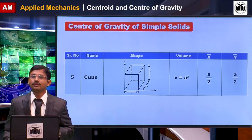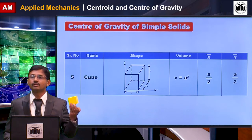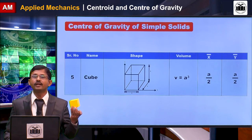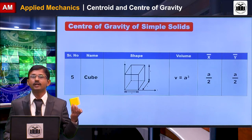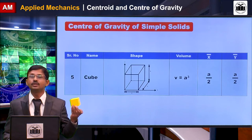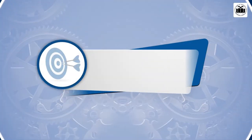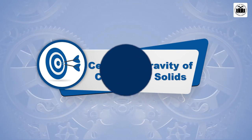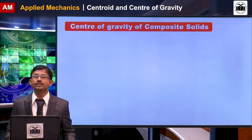The next figure is a cube. A cube has all dimensions equal. The volume of a cube is V = a³, and the centroid is at a/2 because it has symmetry about all axes. Hence x-bar is a/2. With the help of these simple solid formulas, we can discuss the center of gravity for composite solids.